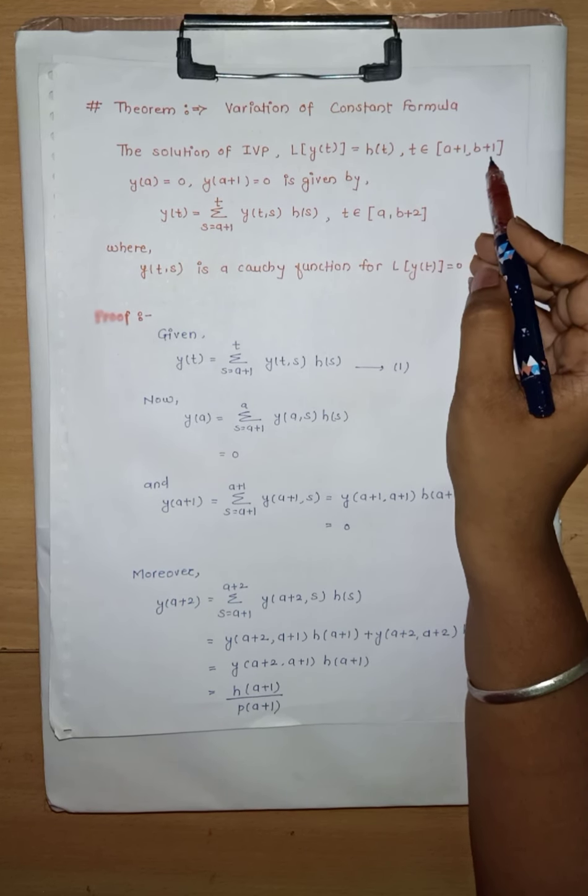Today's first theorem is the variation of constants formula. The statement: the solution of IVP L[y(t)] = h(t), where t belongs to the closed interval [a+1, b+1], with y(a) = 0 and y(a+1) = 0, is given by y(t) = summation over s from a+1 to t of y(t,s) * h(s), for t in the closed interval [a, b+2], where y(t,s) is a Cauchy function for L[y(t)] = 0.